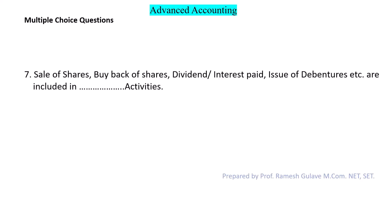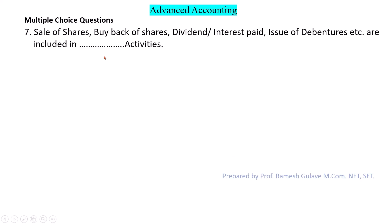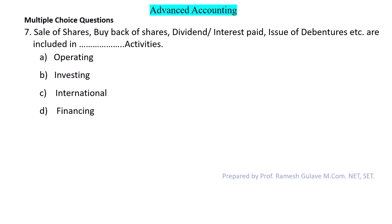Next question: Sale of shares, buyback of shares, dividend or interest paid, issue of debentures — these are included in which activities? Sale of shares, buyback of shares, dividend paid, interest paid, or debenture issue — all these are financing activities. So the answer for this question is option D: financing activities.